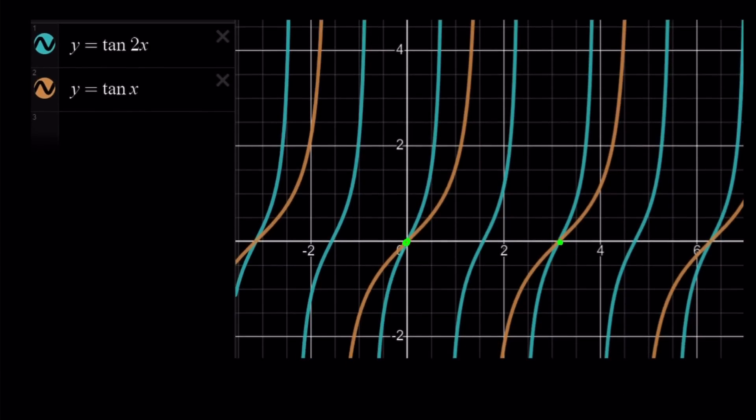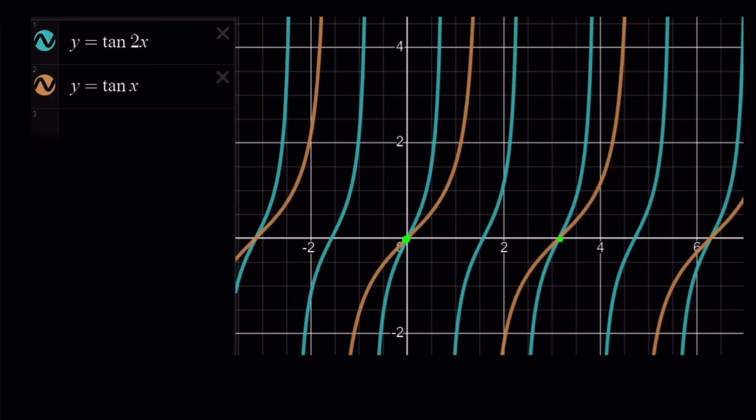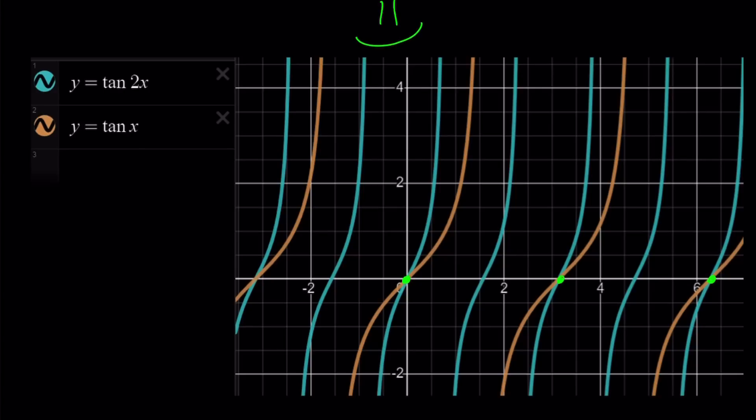So we have y equals tangent 2x and tangent x. I graphed them together. As you can see, at 0, at pi, at 2 pi, our graphs nicely intersect. And this brings us to the end of this video. Thank you for watching. I hope you enjoyed it. Please let me know. Don't forget to comment, like, and subscribe. I'll see you tomorrow with another video. Until then, be safe. Take care and bye-bye.